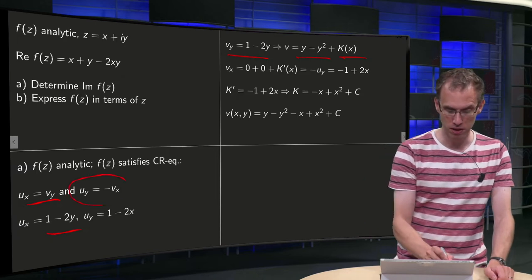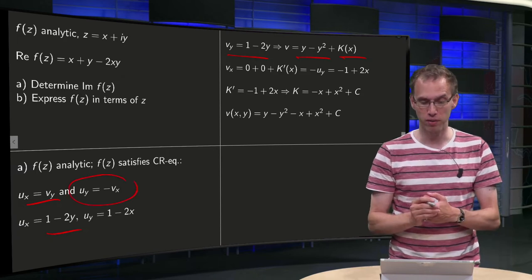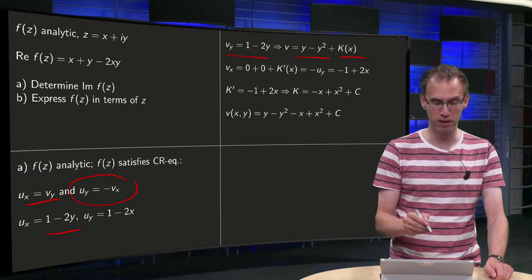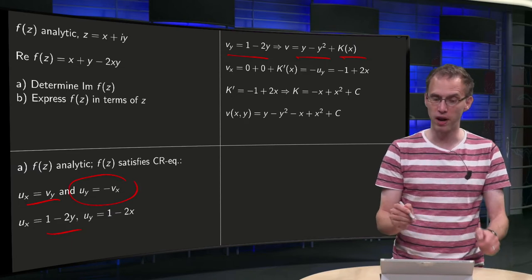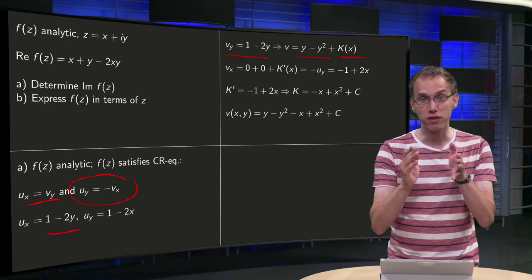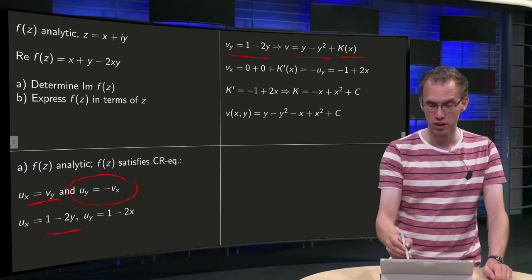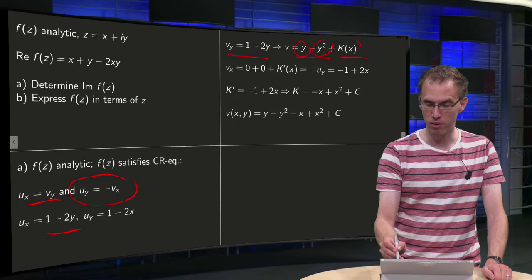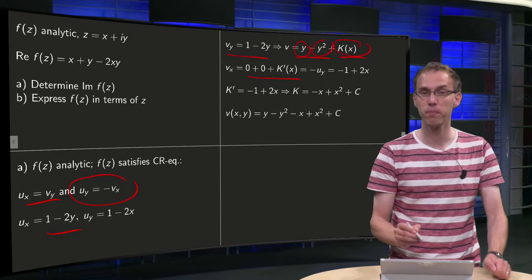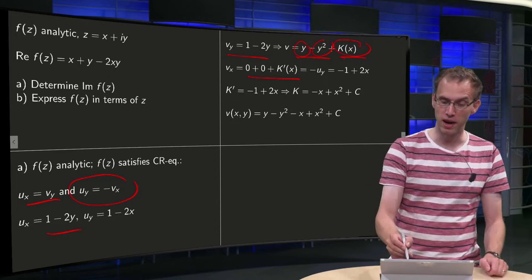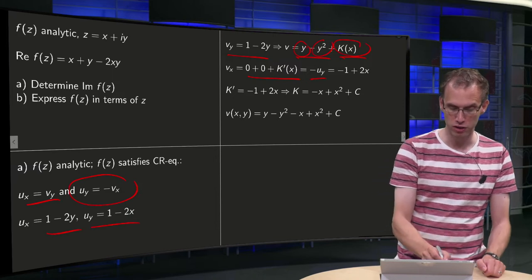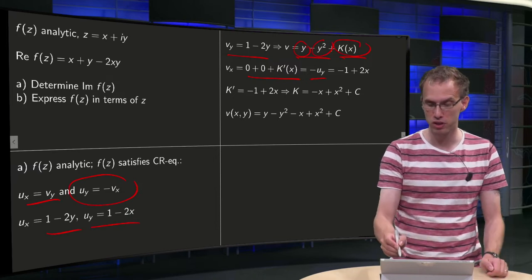We have our v, so now we can compute vx, and then use -vx = uy. So first we differentiate v with respect to x, so these terms drop out and we're only left is the K', so there we are: vx = -uy. We have our uy over here, so -uy = -1 + 2x, so there we are.